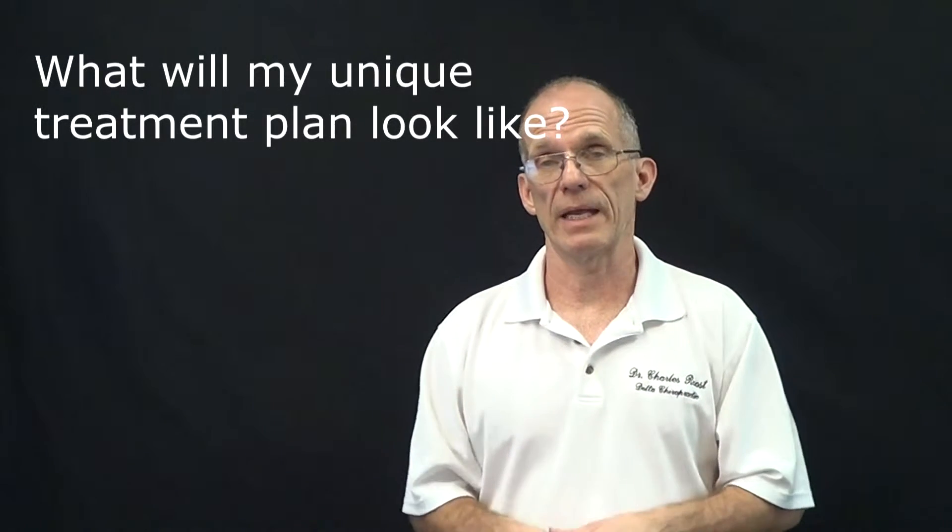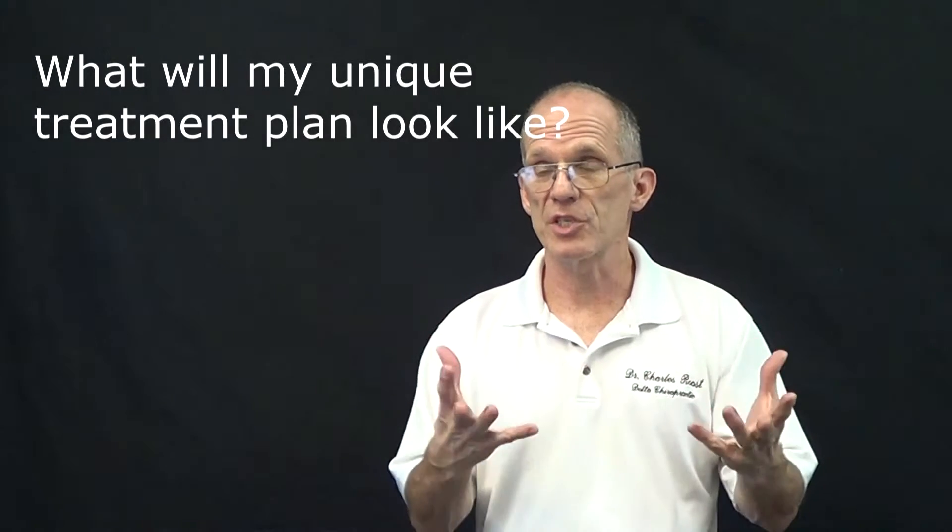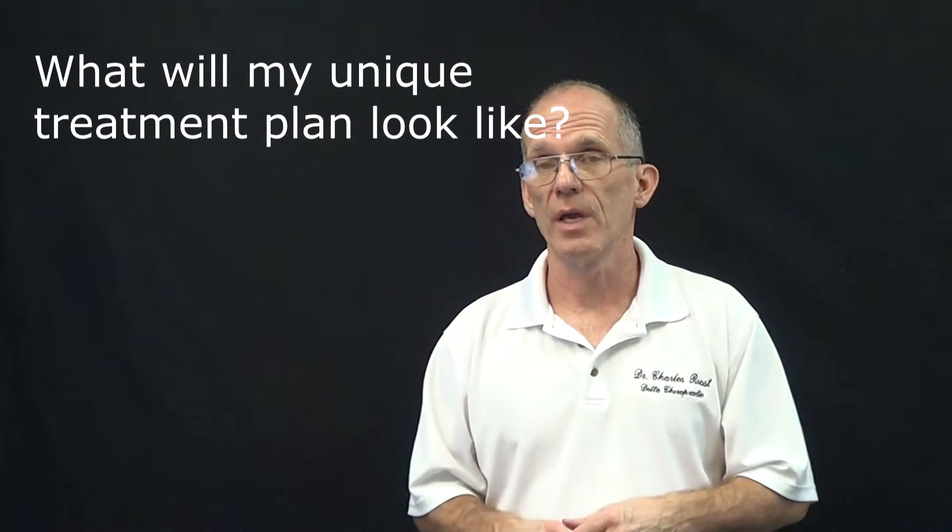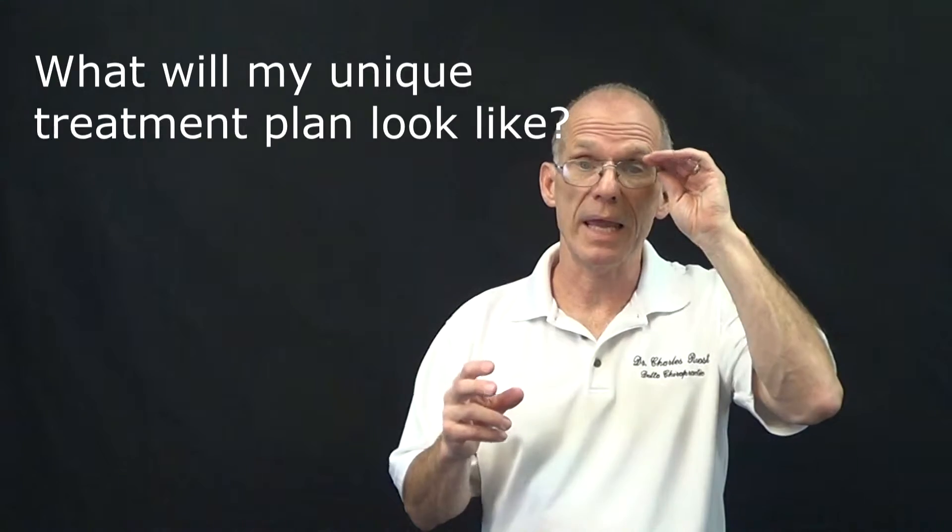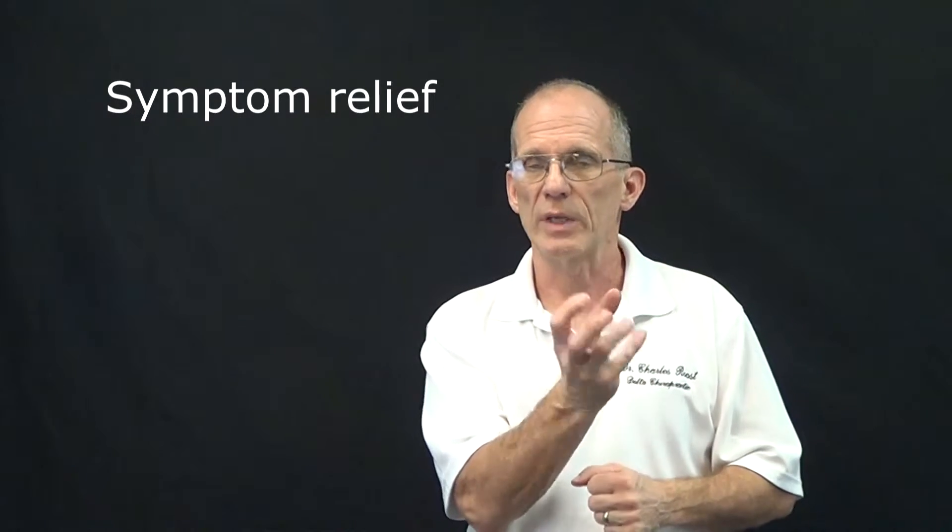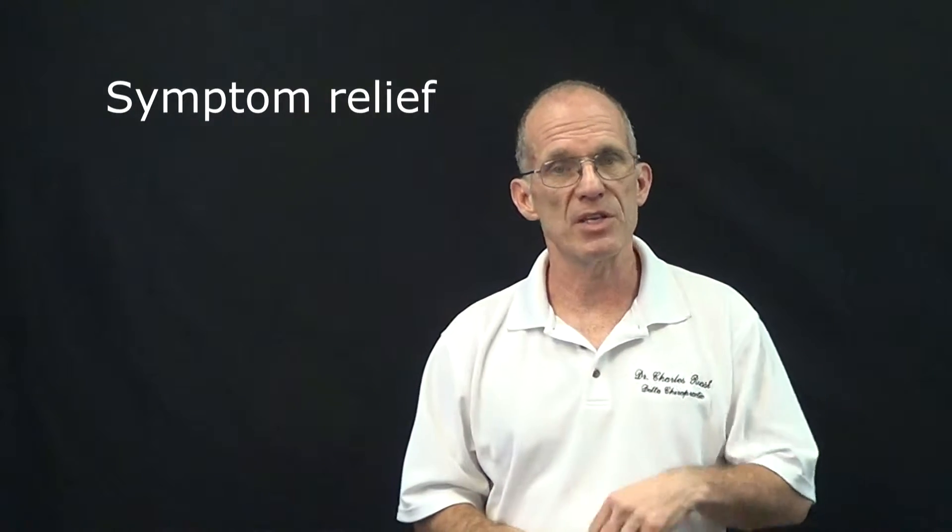A third question that you ought to ask is what kind of a treatment plan can I expect? After the chiropractor does his exam and consultation with you, the chiropractor should come up with a plan of treatment to get to the goals, the outcome goals that you're looking for and that the chiropractor agrees with. There are basically three types of treatment plans. One is a crisis intervention or a symptom-only relief kind of adjustment plan. That may take a very few adjustments, may take up to a dozen adjustments, may take a little bit more depending on the complexity of your case and how long you've had your symptoms, but that's crisis intervention care.